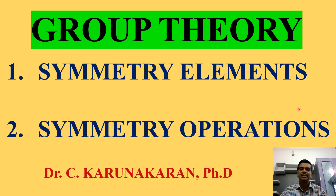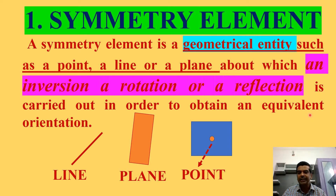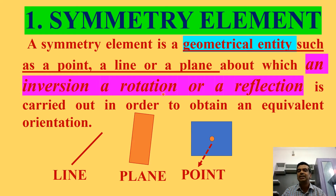We will see what are symmetry elements, what are symmetry operations, and distinguish between them. A symmetry element is a geometric entity — it is a line, it may be a plane or mirror, or it may be a point — about which an inversion, rotation, or reflection is carried out in order to obtain an equivalent configuration or equivalent orientation. Symmetry elements are lines, planes, mirrors, or points through which symmetry operations such as inversion, rotation, and reflection are carried out to obtain an equivalent orientation.